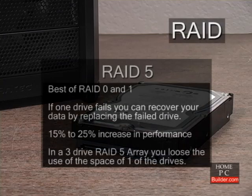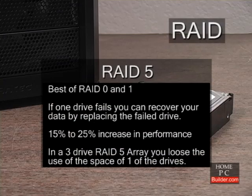RAID 5 combines the striping of data in RAID 0 with the built-in backup of RAID 1. Three or more hard drives in a RAID 5 array keeps the usable data on two-thirds of the drives' combined space, with one-third of the drives' space used as the redundant or parity data.